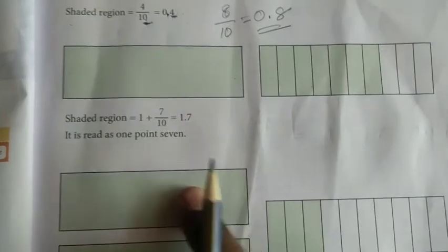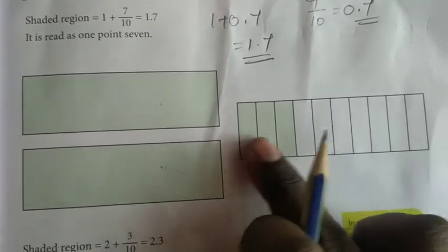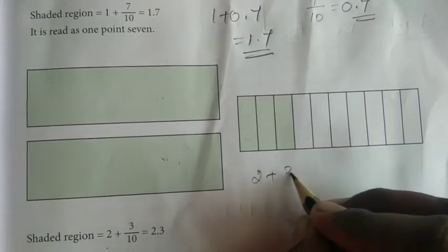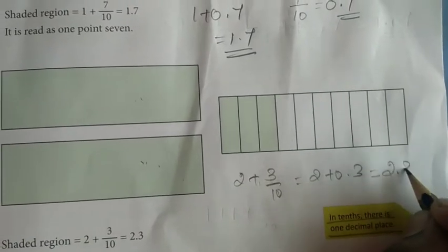In the next example, one full rectangular bar plus a second bar divided into 10 equal parts with 7 parts shaded: the fraction is 7 by 10, which equals 0.7. So 1 plus 0.7 gives 1.7. In another example, two full rectangular bars and 3 out of 10 parts colored: 2 plus 0.3 gives 2.3.